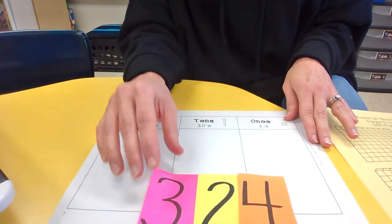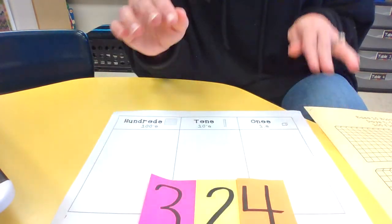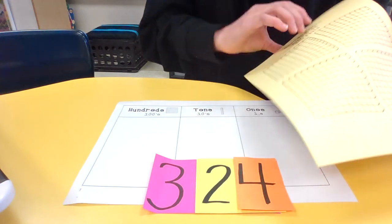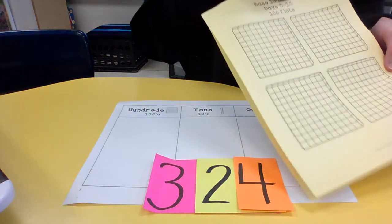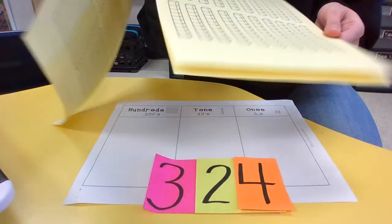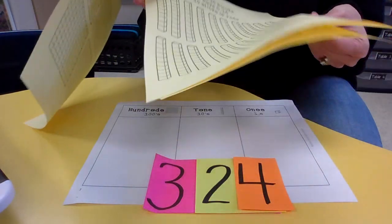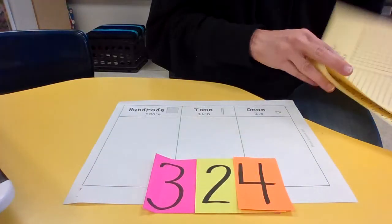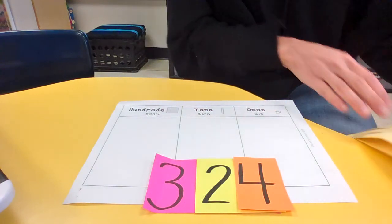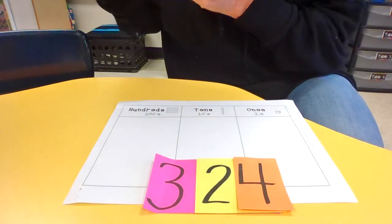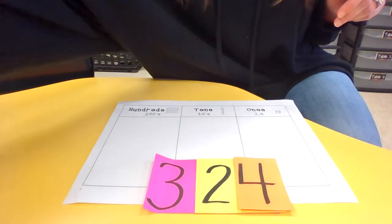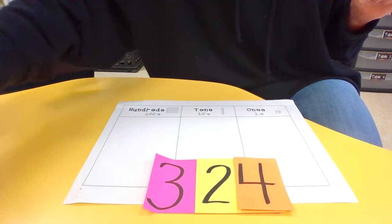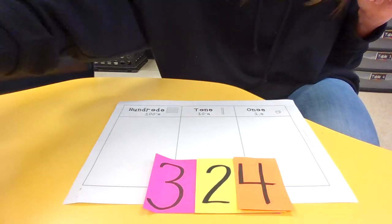You're going to have your hundreds chart sitting in front of you, and we're going to start with the number 324. So we're going to make that with our flats, our hundreds flats, our rods, our tens, our cubes, our ones. So go ahead and make that for me, 324 on your chart. I'm going to give you a little bit of time to do that before I make mine.